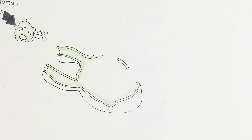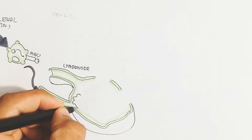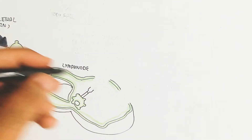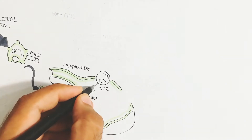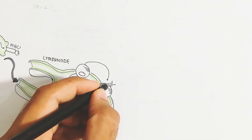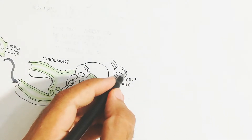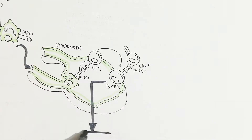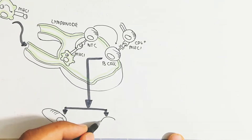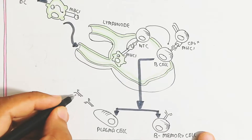The dendritic cell produces cytokines and moves toward the lymph node via the lymphatic system. The MHC class 1 molecule presents the antigen to the naive T cell, which acts as a co-stimulatory molecule. This naive T cell then triggers the B cell via CD4 T helper cell proliferation, which stimulates the B cell to proliferate and form plasma cells and B memory cells.